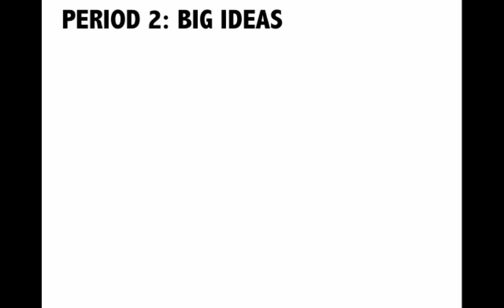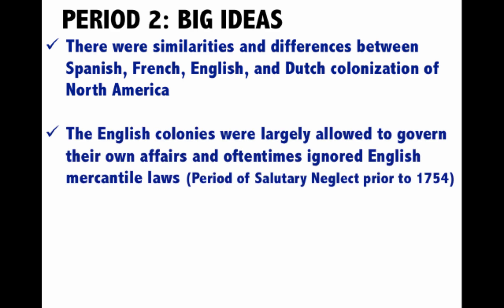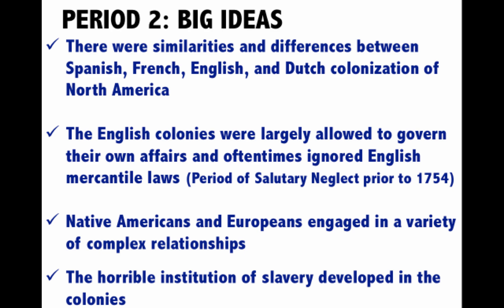Some big ideas for Period 2 to keep in mind: one, there were similarities and differences between the Spanish, French, English, and Dutch colonization efforts of North America. Two, the English colonies were largely allowed to govern their own affairs and oftentimes ignored English mercantile laws — historians called this period before 1754 a period of salutary neglect. Three, Native Americans and Europeans engaged in a variety of complex relationships. And finally, the horrible institution of slavery developed in the colonies during this time.